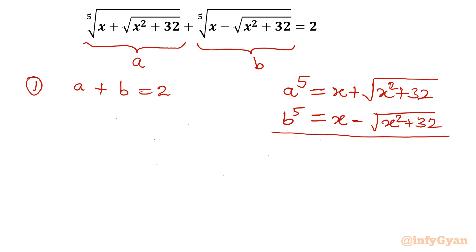I will sum both equations. So a⁵ plus b⁵ equals 2x, since the square root terms cancel out. This will be equation number 2.